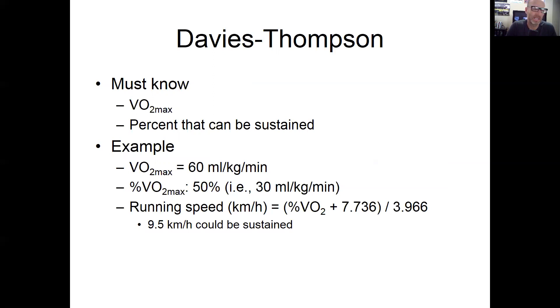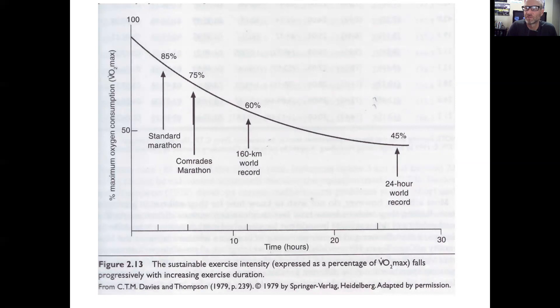Now clearly that sustained percentage will vary based upon distances. This is a figure illustrating that. On the y-axis is percent oxygen consumption that can be sustained, and on the x-axis is time. Standard marathon - 85% of VO2 max may be able to be sustained by most athletes. Comrades marathon, that's a double marathon in South Africa, so you do 52.8 miles for that. Then these are other ultra runs all the way up to even 24-hour runs. To run for 24 hours, you probably only sustain about 45% VO2 max. So you can build prediction tables around this if you know VO2 max.